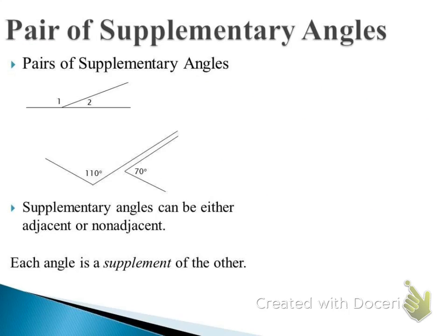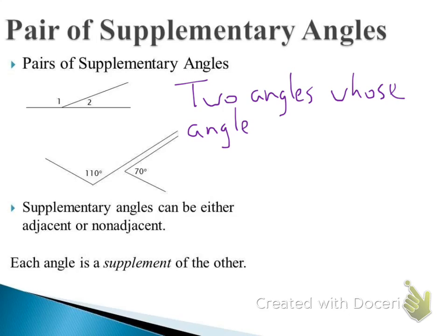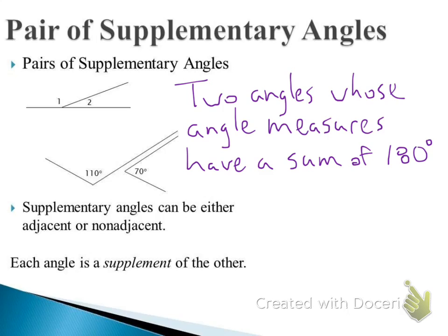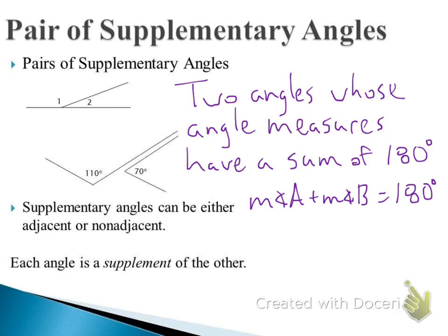A pair of supplementary angles is the same idea — two angles. They don't add up to 90 degrees, but the first pair adds up to a straight line and the second pair adds up to 180. So this is two angles whose angle measures have a sum of 180 degrees. The measure of angle A plus the measure of angle B equals 180 degrees — they add up to be a straight line. Same as complementary, they can be adjacent or non-adjacent.